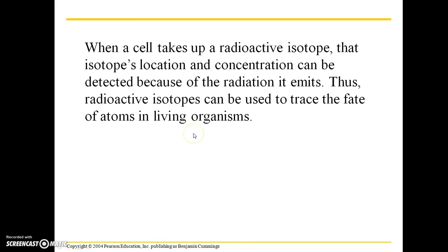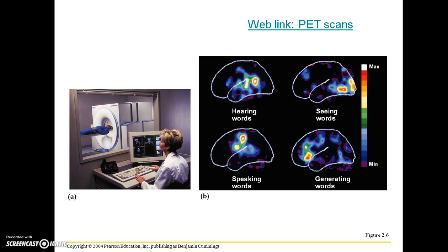When a cell takes up a radioactive isotope, that isotope's location and concentration can be detected because of the radiation it emits. Thus, radioactive isotopes can be used to trace the fate of atoms in living organisms. That is how radioactive isotopes are used in PET scans. Here's another web link if you would like to explore more information about how PET scanning works.